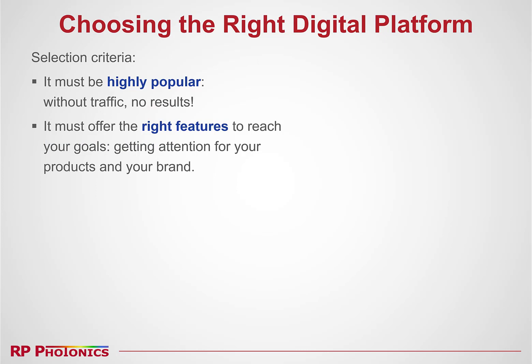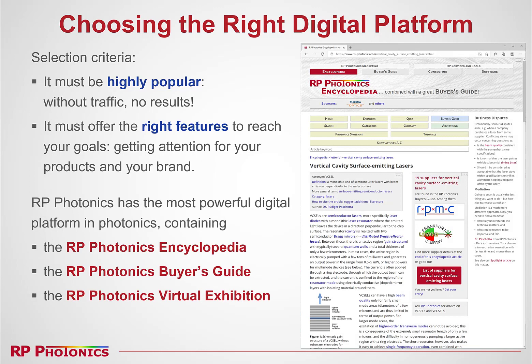The first step is to choose the right digital platform. First of all, it must be highly popular because obviously without traffic there cannot be results. Second, it must also offer the right features to reach your goals — getting attention for your products and your brand. It turns out that RP Photonics has the most powerful digital platform in Photonics, containing our famous encyclopedia, a buyer's guide, and the recently introduced RP Photonics virtual exhibition.